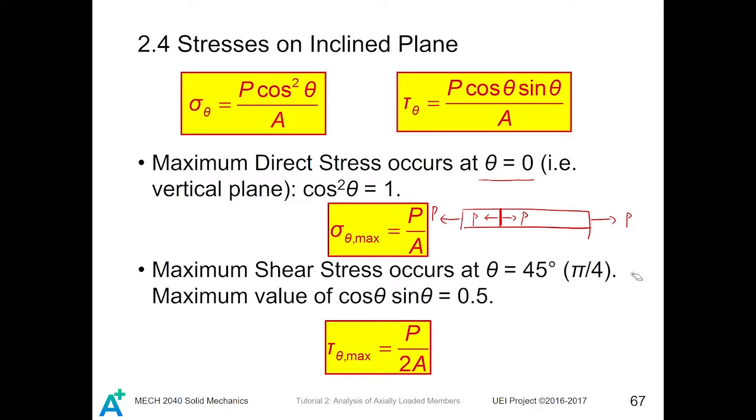For the maximum shear stress, it is a little bit special. Consider cosine theta times sine theta. Its maximum value is 0.5, which occurs at 45 degrees. Therefore, the maximum shear stress occurs at theta equals 45 degrees, which is P divided by 2A.